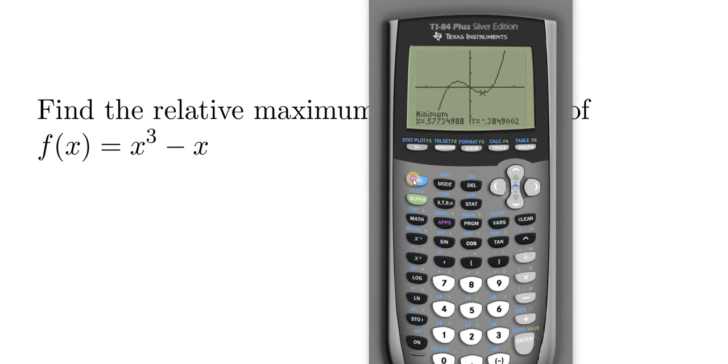Let me do it again. So you go to second, trace, go to minimum. Hit enter one time. It says left bound. So you want to be on the left of where your minimum is. Hit enter. It says right bound. So you want to be to the right of where your minimum is. Hit enter. Then guess. So hit enter one more time. Boom, there it is.